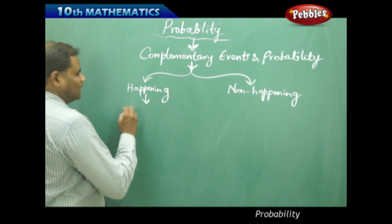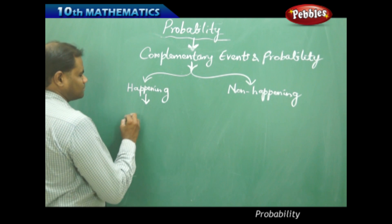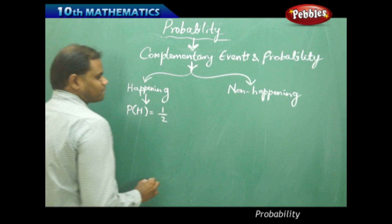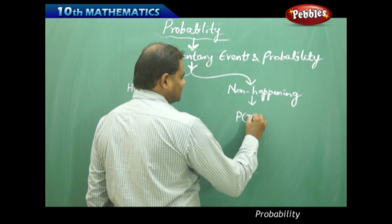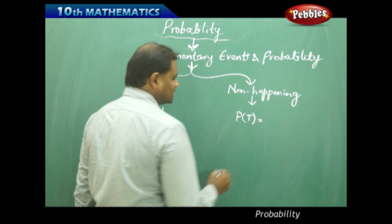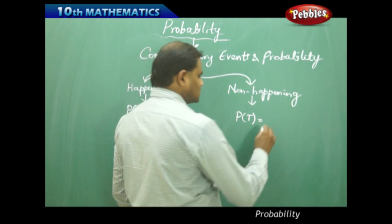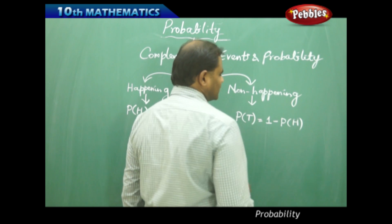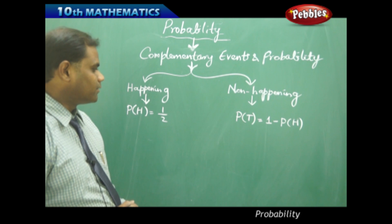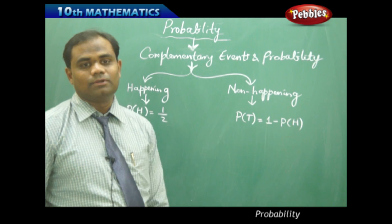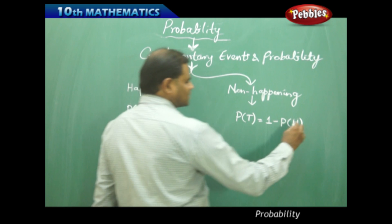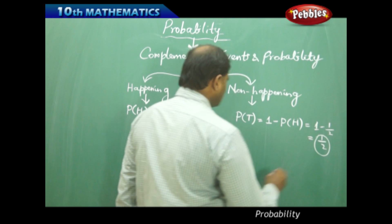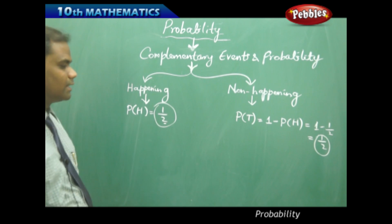For example, the probability of getting a head when a coin is tossed is 1/2, and the probability of getting a tail is also 1/2. We can express this as 1 minus the probability of getting a head — that is, 1 minus 1/2, which equals 1/2. This is how we get the probability of the complementary event.